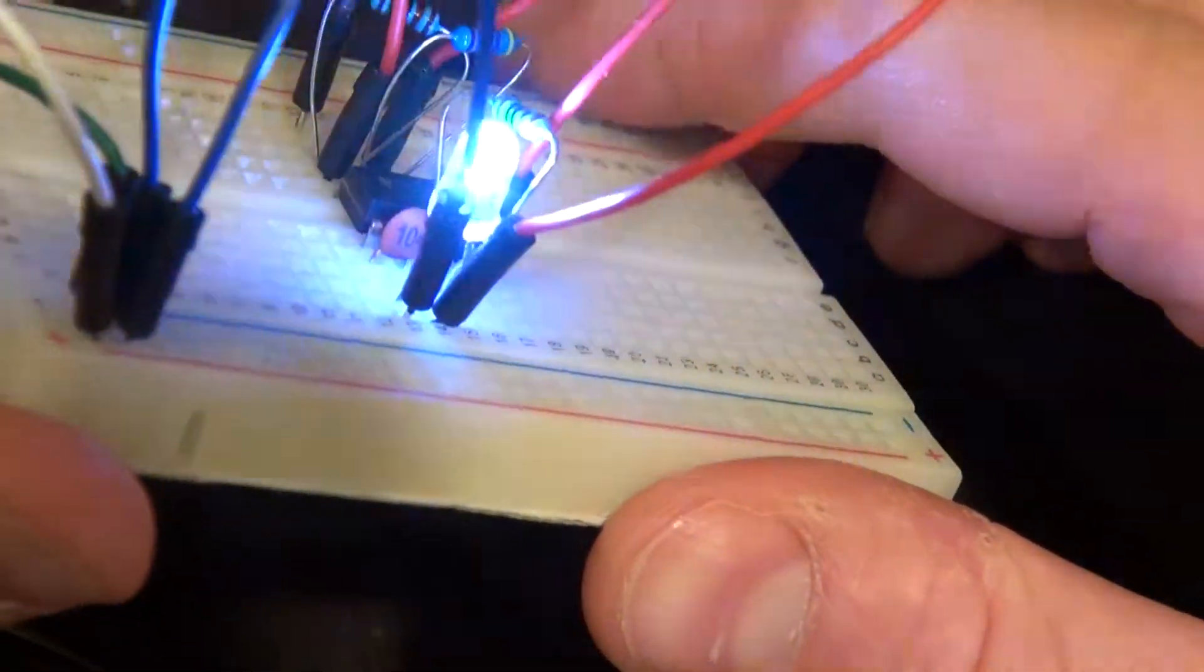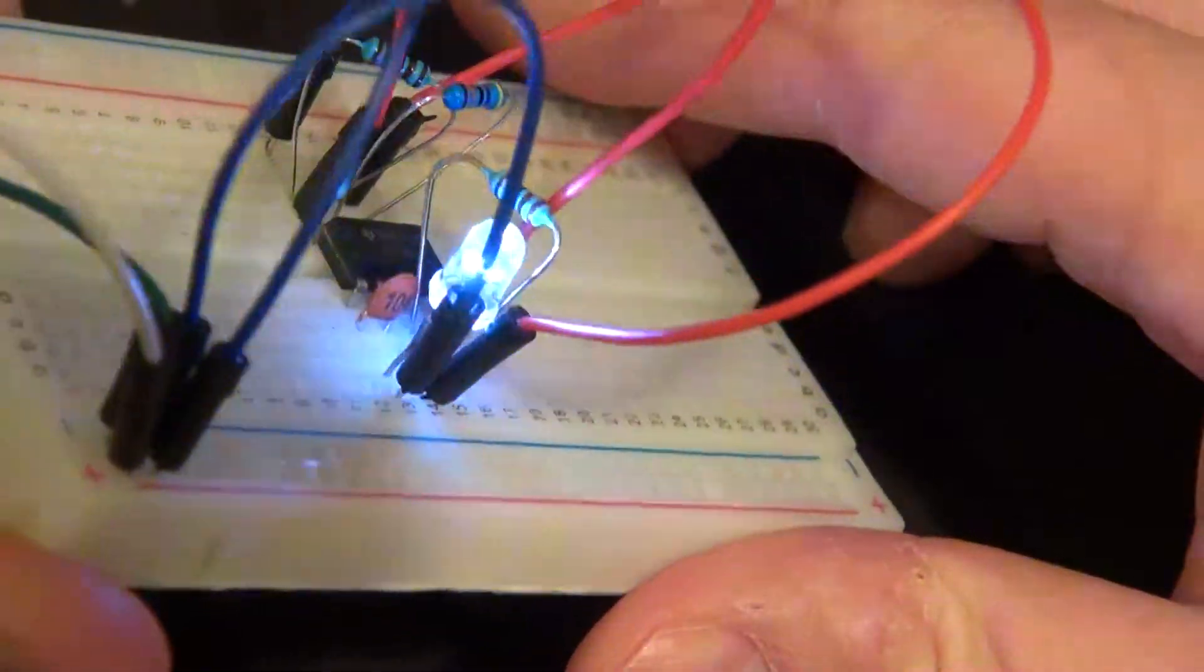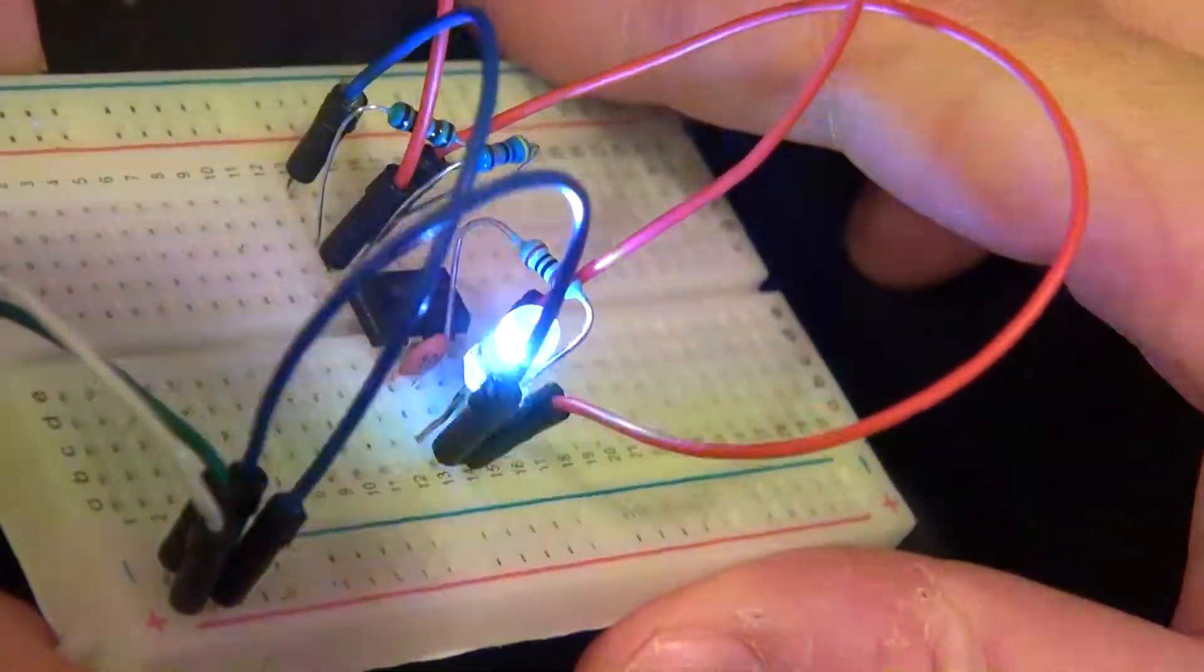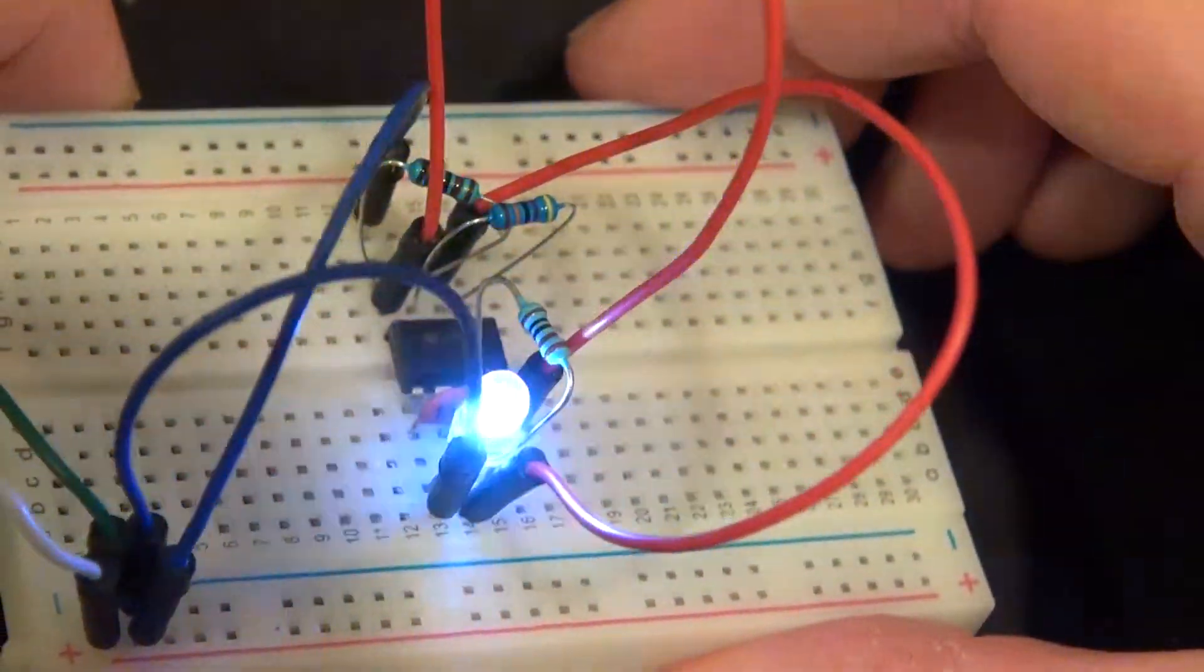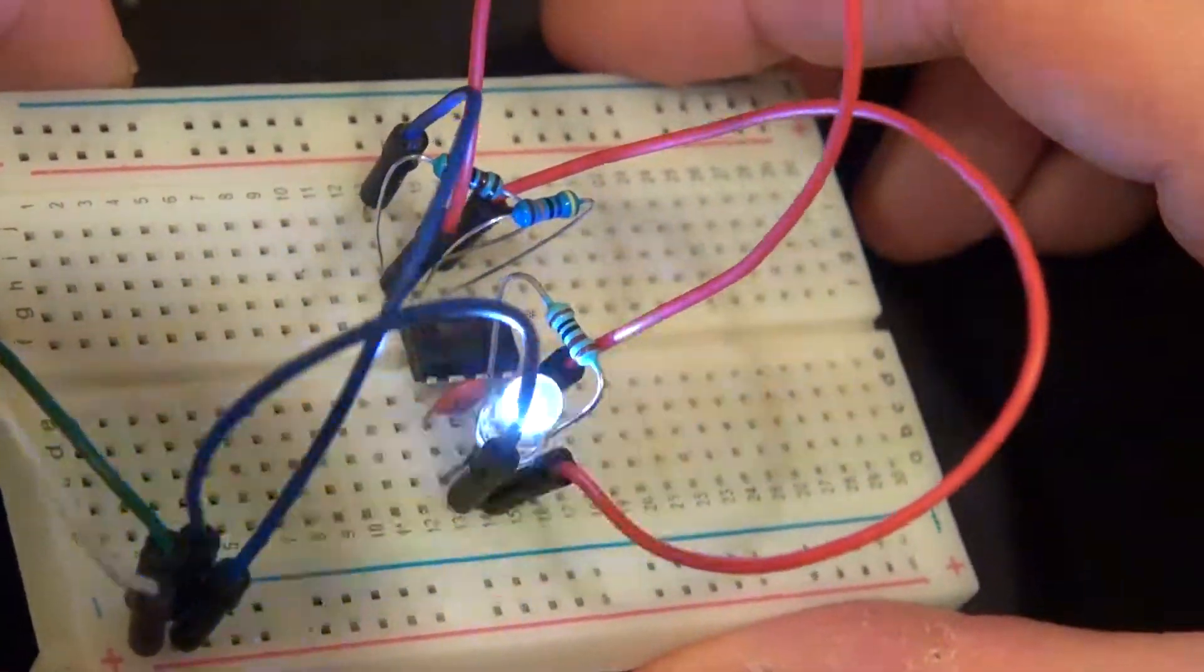The LED is actually flashing faster in person than it is on camera because the frame rate in the camera messes up the flashing rate and makes it look slower. In person it actually looks like a strobe light.